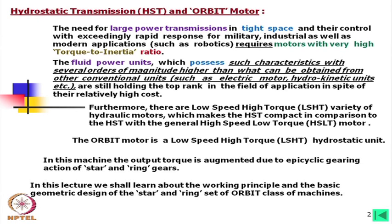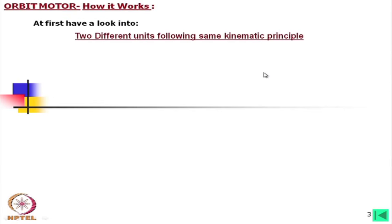In these machines, the output torque is augmented due to epicyclic gearing action of star and ring gears. First, let us look into two different units following the same kinematic principle. This is to understand how the orbit motor works.